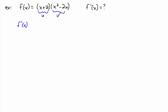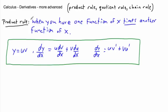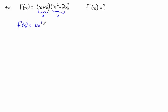We've got u times v. So that means the derivative would be, let's go back to product rule here. Product rule says u v primed plus v u primed. So u v primed plus v u primed.